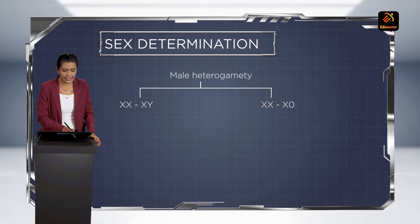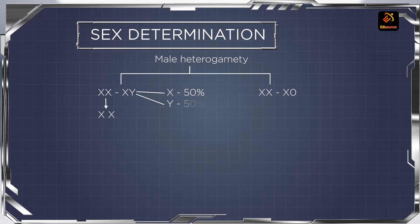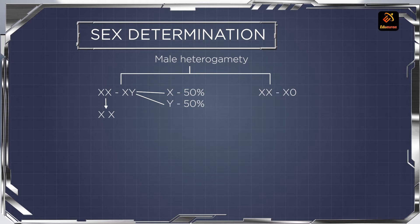Let us study the XX-XY type first. The female organism contains X and X type gametes. Whereas the male gametes contain 50% X chromosomes and 50% Y chromosomes. That means the female gametes are homogametes, but the male gametes are heterogametes — some containing X chromosomes and some containing the Y chromosome. That is the reason it is called male heterogamety.